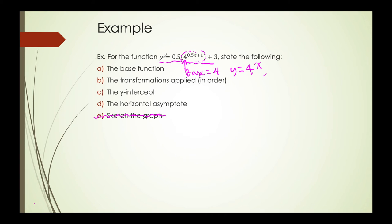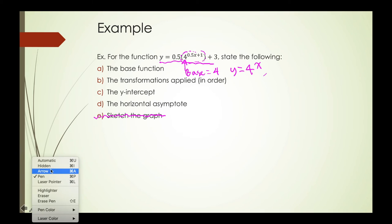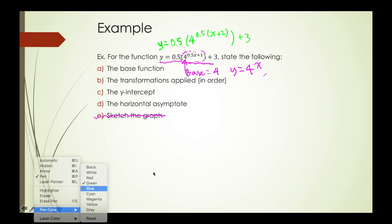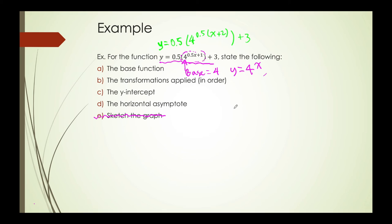Our next step is to identify the transformations. We first need to make sure it is written in the correct form, meaning the exponent needs to be factored out properly. So we have y is equal to 0.5 multiplied by 4 to the power of 0.5 times, in brackets, x plus 2, plus 3. Now we can more easily identify what the a, k, d, and c variables are. We notice first that our a value is 0.5.